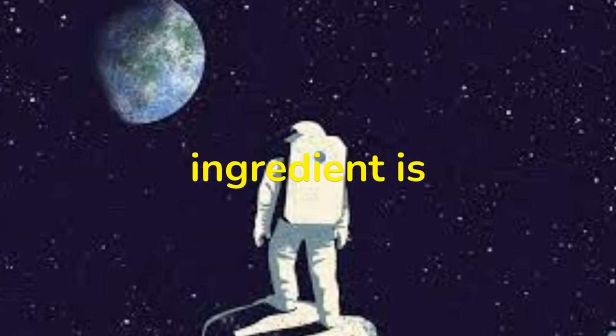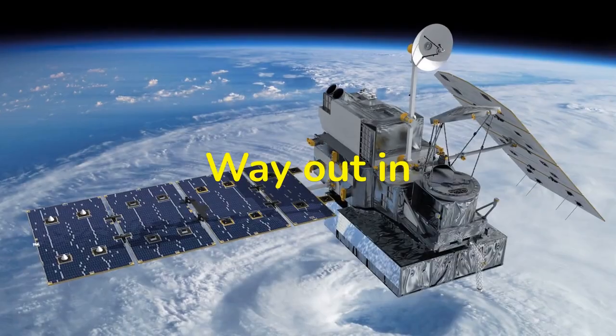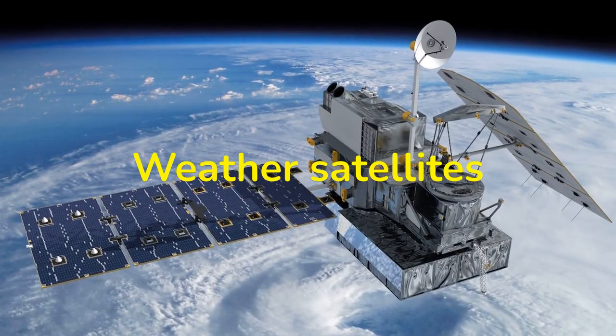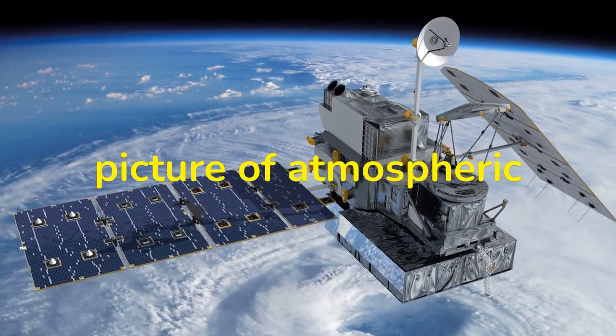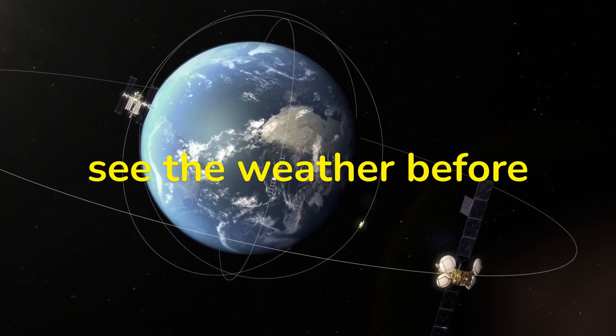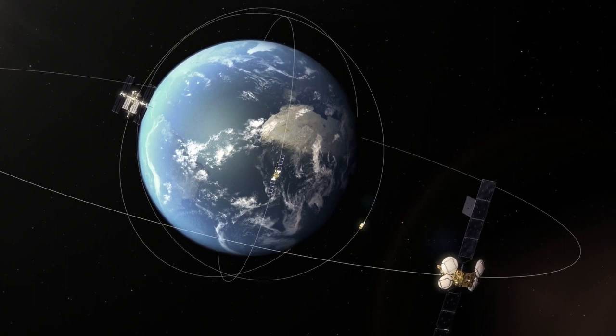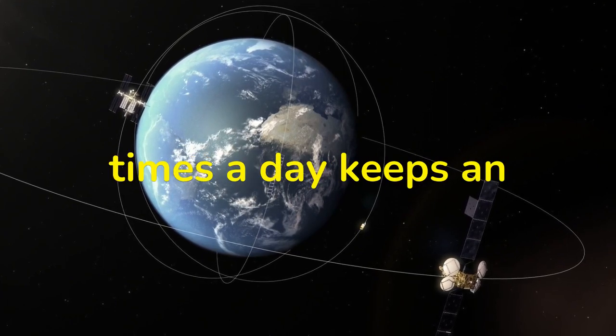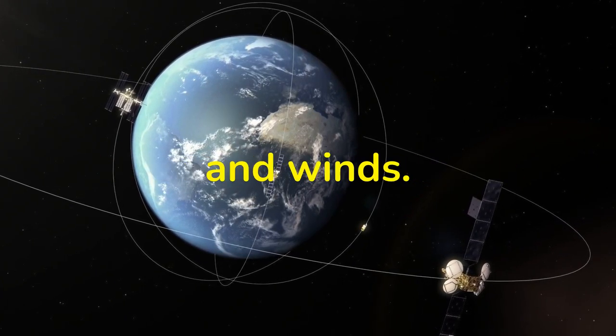Another vital ingredient is space. Way out in orbit, weather satellites are getting the big picture of atmospheric changes. These meteor satellites allow us to see the weather before it reaches us, orbiting the earth 14 times a day, keeping an eye on the temperature, humidity, and winds.